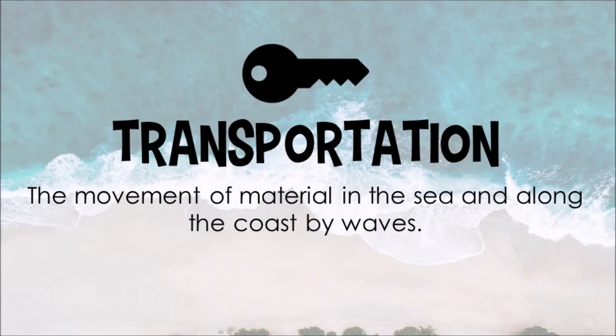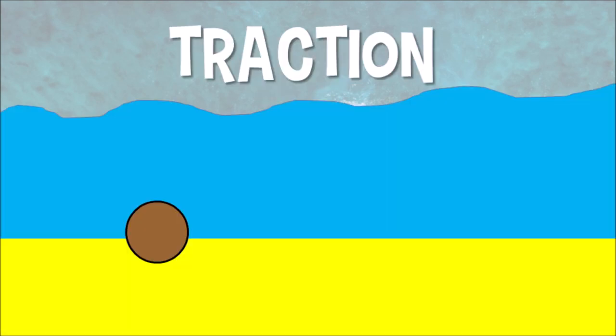So now we've looked at how waves transport material on the coastline, let's start to think about how they transport material in relation to the sea or ocean. Now waves can do this a number of ways. The first one is traction. Traction is when we have really large boulders that the wave doesn't have enough energy to pick up, so instead it pushes them along the coastline a little bit at a time.